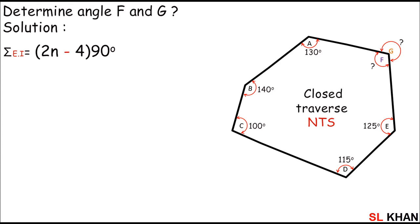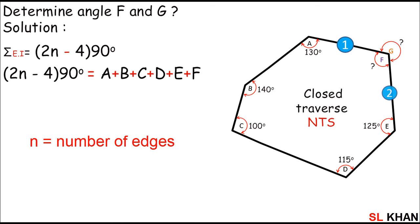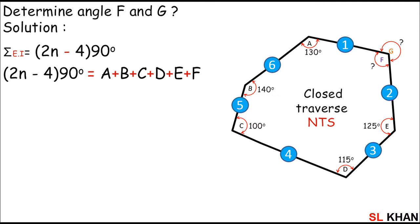So (2n − 4) × 90 equals A + B + C + D + E + F. We need to plug in: n is the number of sides, and we have six sides — you can count them: 1, 2, 3, 4, 5, and 6. So the number of edges is 6.